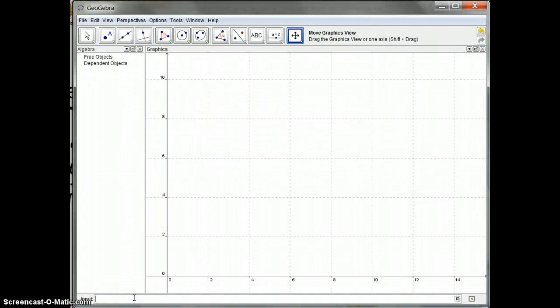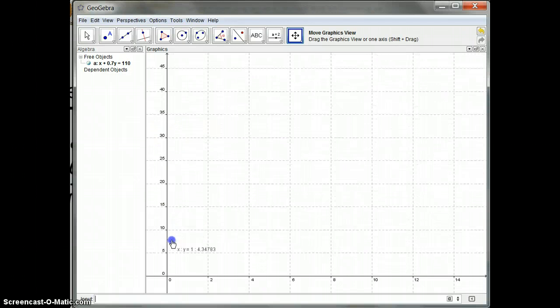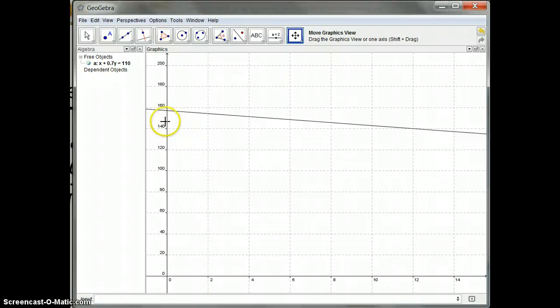So our first constraint is going to be x plus 0.7y is equal to 110. It can't graph inequalities so we're going to graph the lines and then we can shade later. Now notice it goes into the free objects up here and we can't see it because the axes need to be changed. So if you just pull down you should be able to get to a point where you see the graph.